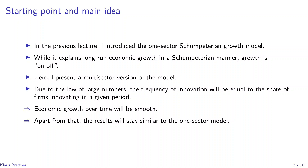In the previous lecture I introduced the one-sector Schumpeterian growth model, which explains long-run economic growth with creative destruction, stochastic growth, and vertical innovation. However, the economic growth rate in that model is on-off: positive growth in one period, zero growth in another, which is not what we observe. I will now present the multi-sector version where this on-off growth is smoothed out by averaging over a continuum of firms in the intermediate goods sector. Due to the law of large numbers, the frequency of innovation equals the share of firms that innovate in a given period, making economic growth smooth over time.